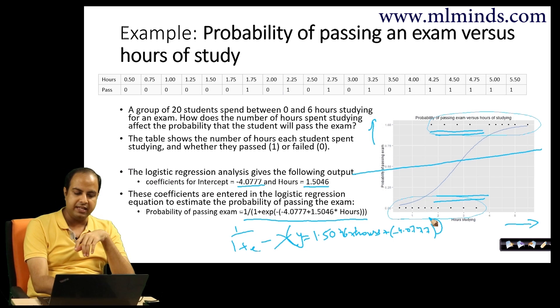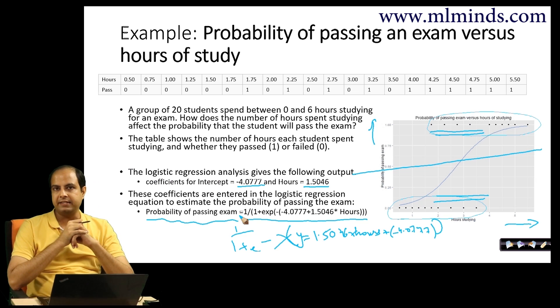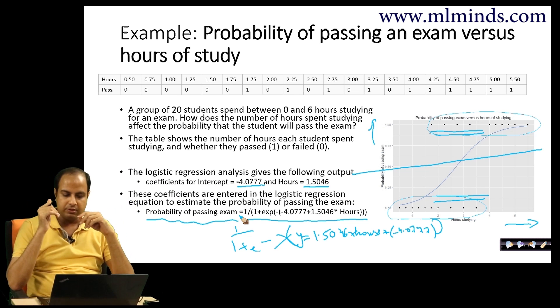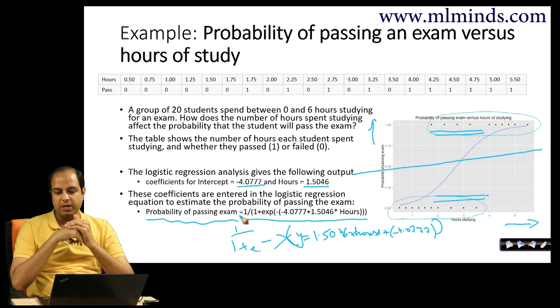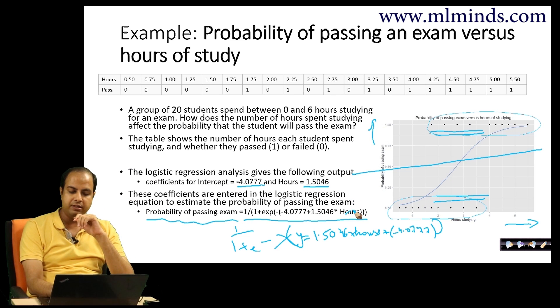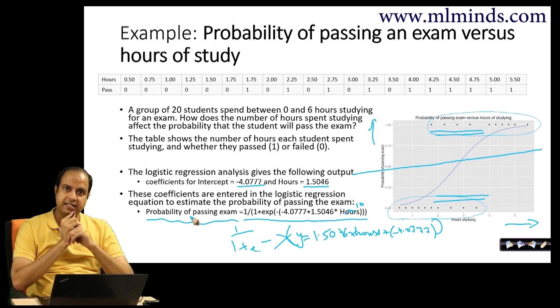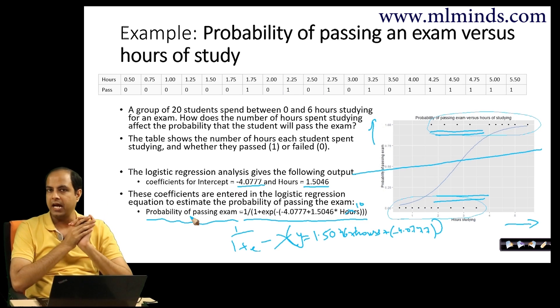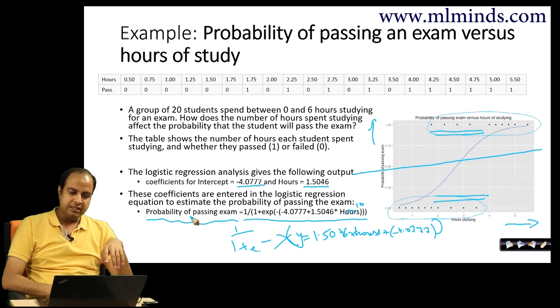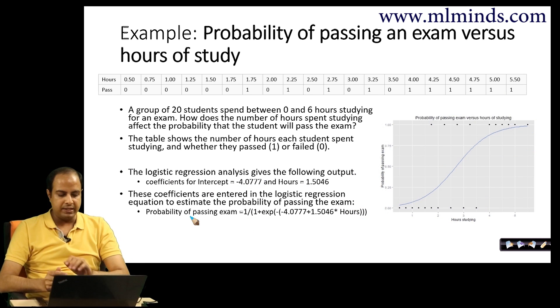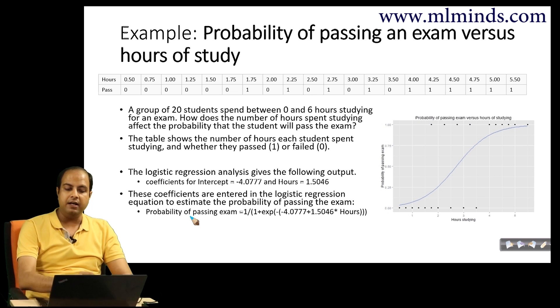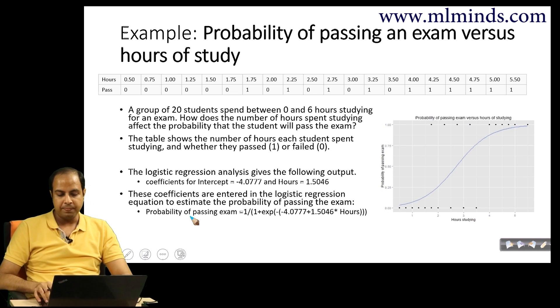Once you have this equation, this is the probability of passing an exam. You can take a new student who studied like 10 hours, substitute hours equal to 10 in this equation and get the probability. If the probability is greater than 0.5, you predict this student will pass the exam. If the probability is less than 0.5, you predict the student will not pass the exam. That's a simple example to understand how logistic regression works.